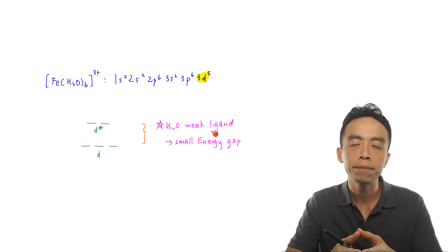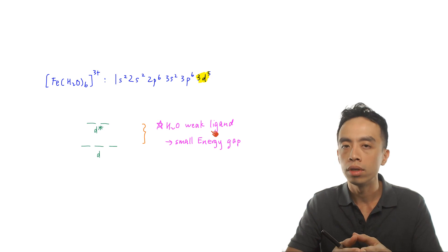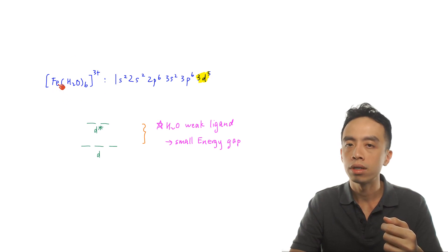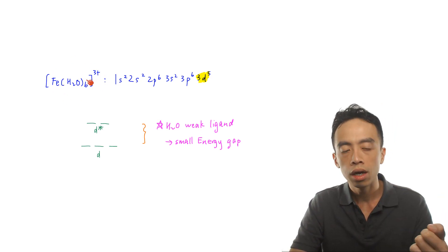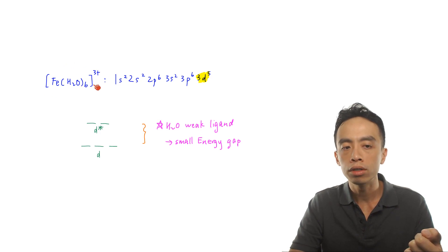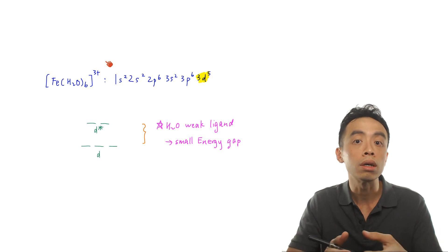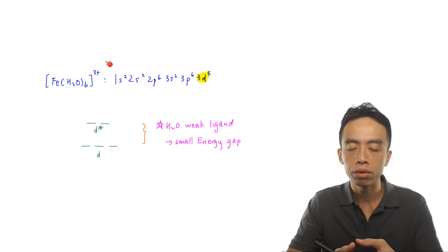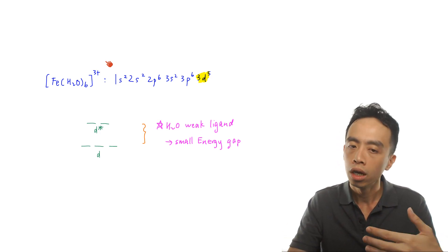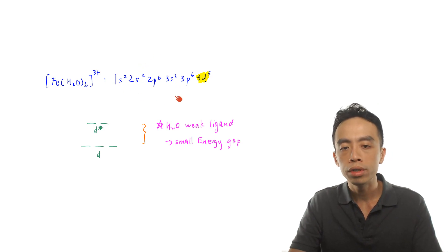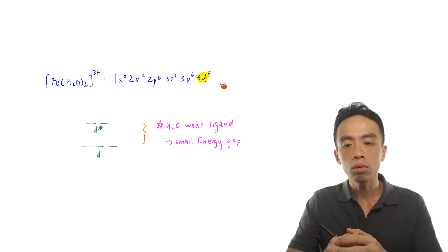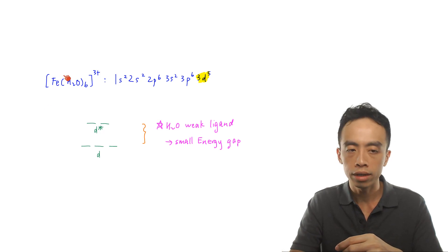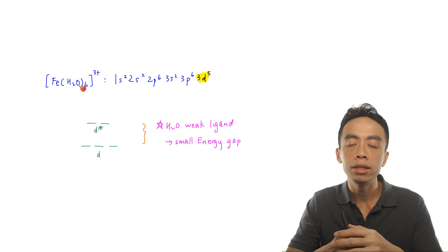Now let us consider iron 3+ coordinated to water ligands — iron surrounded by six water ligands. The overall charge is 3+ since iron is in the +3 oxidation state and water ligands are neutral. The electronic configuration for iron 3+ remains the same: 1s² 2s² 2p⁶ 3s² 3p⁶ 3d⁵. However, because of complex formation between the iron metal center and the water ligands, there will be d-d orbital splitting.